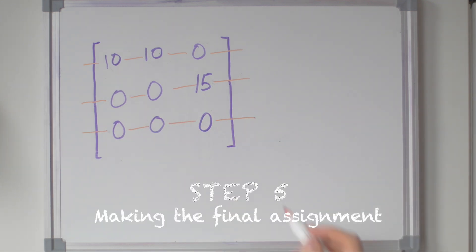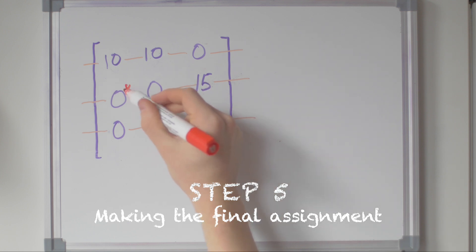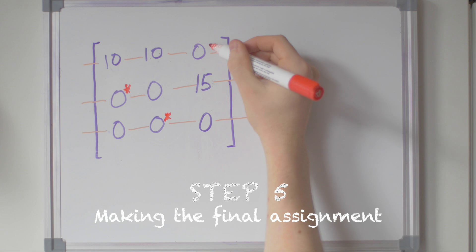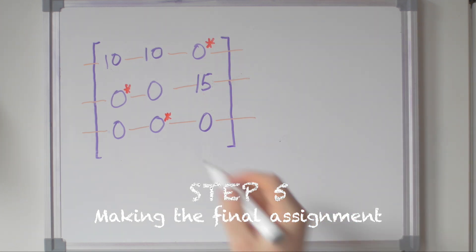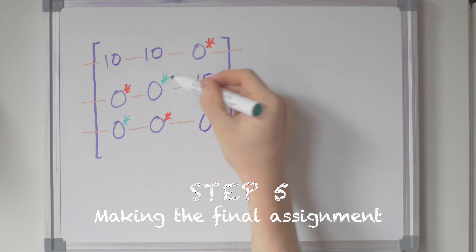Step five: making the final assignment. During step five, you may find more than one way of choosing n zeros, as is the case with this example. This is okay, as all the choices will have the same total cost.